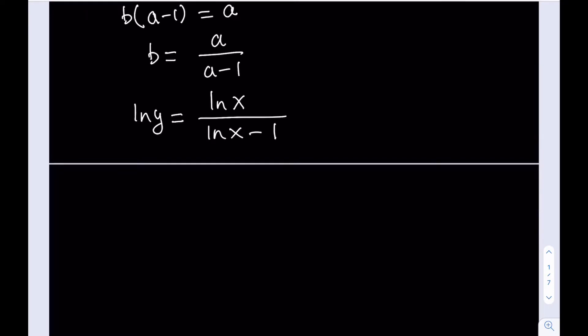So we're going to e to the power both sides. So it's going to be e to the power ln(y) equals e to the power ln(x) over (ln(x) minus 1).